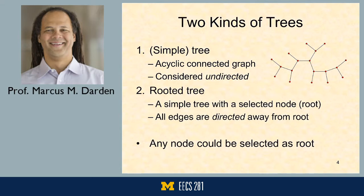Everything in a tree has to be connected to the tree, which is not always true in a graph. We can have subsections of a graph. In Michigan, for instance, there are large islands with roads on them that are part of the road system, but there are certain places you can't drive to get to them. On the other hand, everything has to be reachable within a tree.